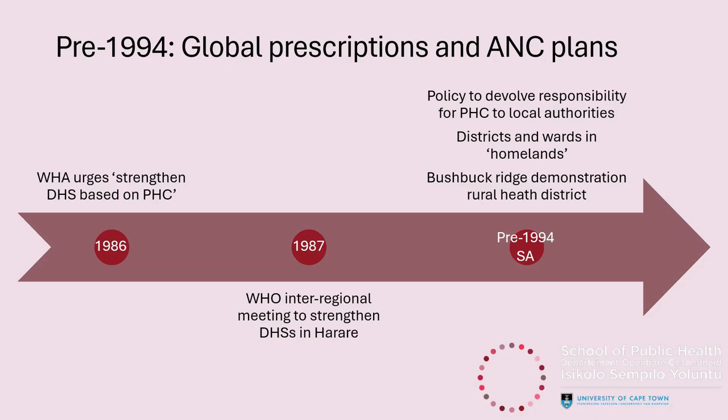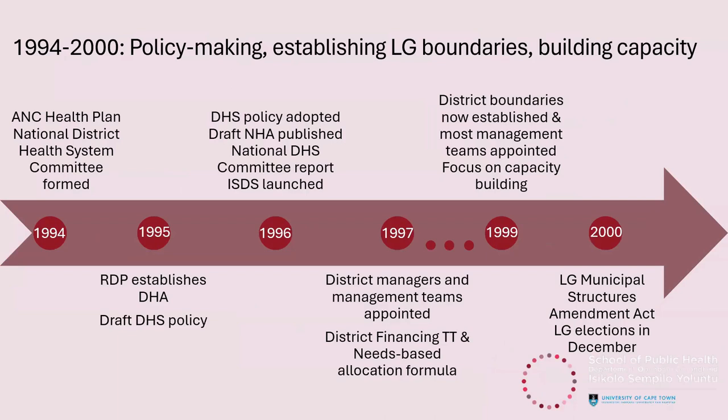All of this was happening in the broader context of deliberate and longstanding inequities in health care. By the end of the pre-1994 era, there was a lot of talk in the SAMJ, with many people calling for immediate investment in the DHS, saying 'we cannot wait for the new constitution — it has to happen right now.' So in this context we enter the post-1994 era, which was really a flurry of policymaking activity to establish the district health system and build service delivery and management capacity at the district level.